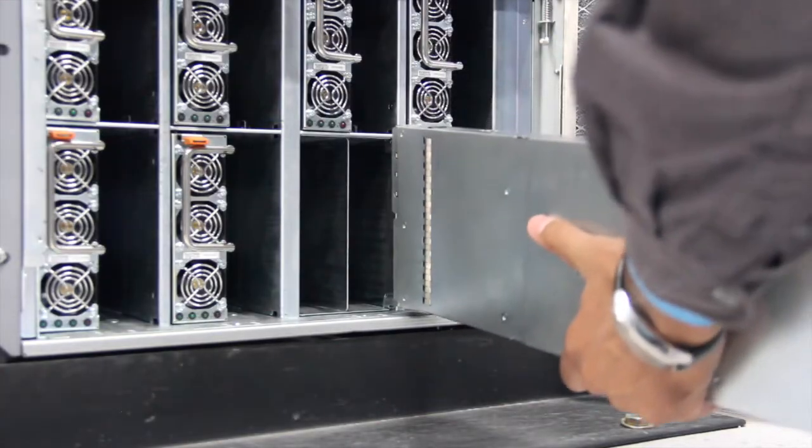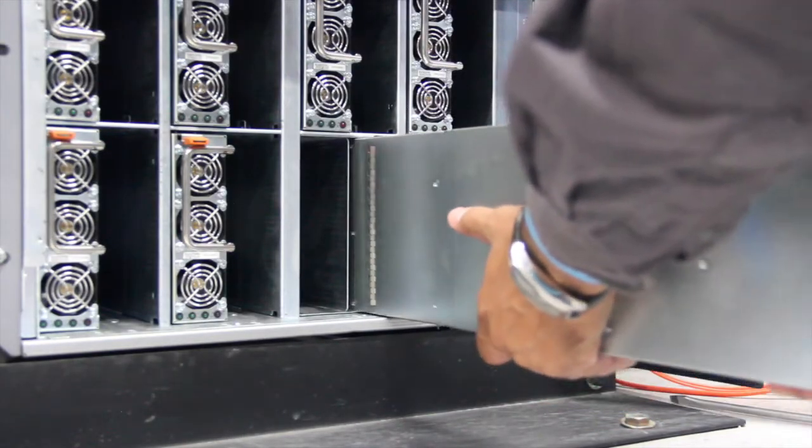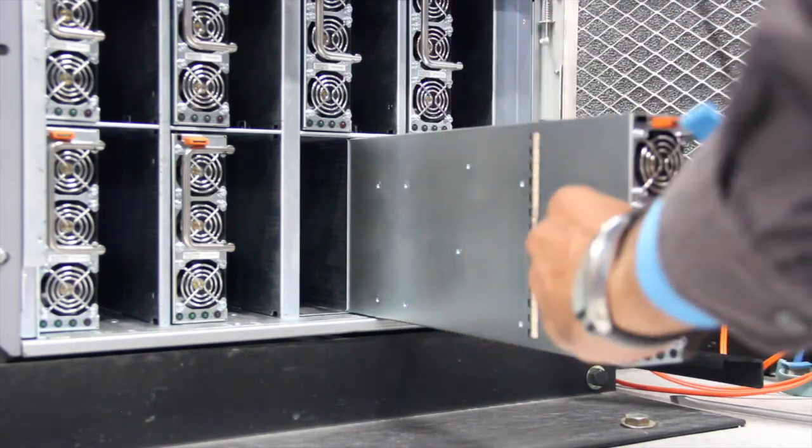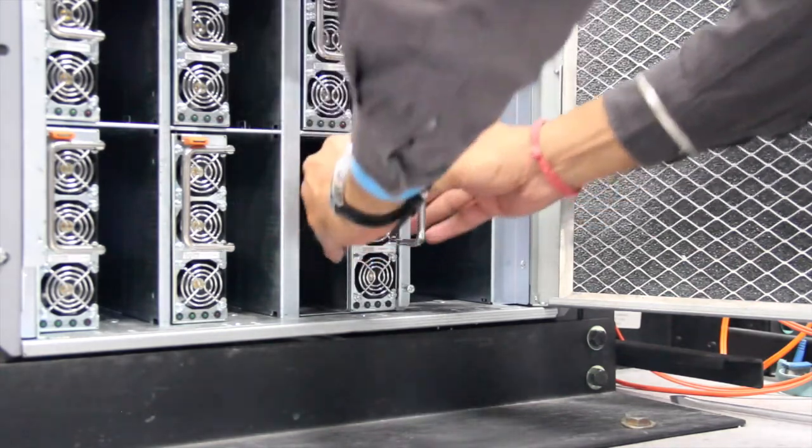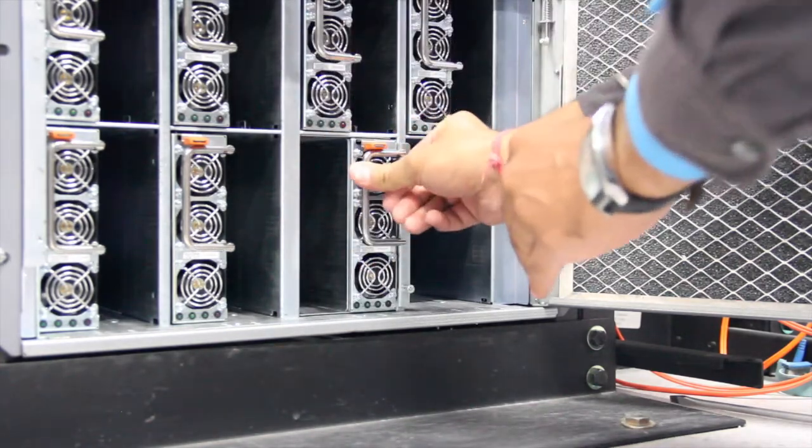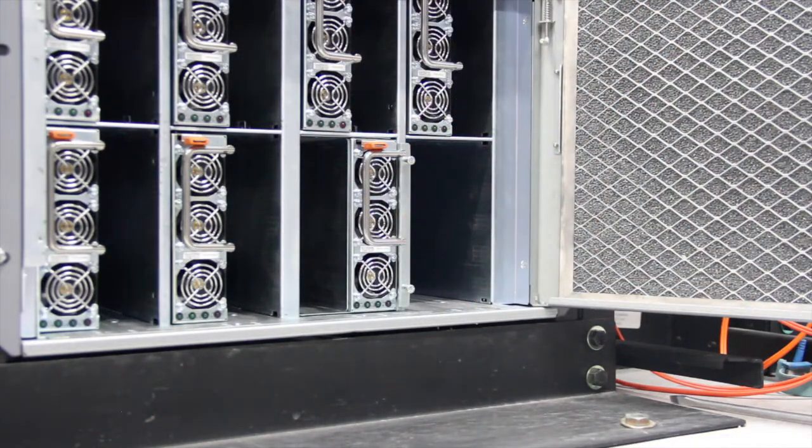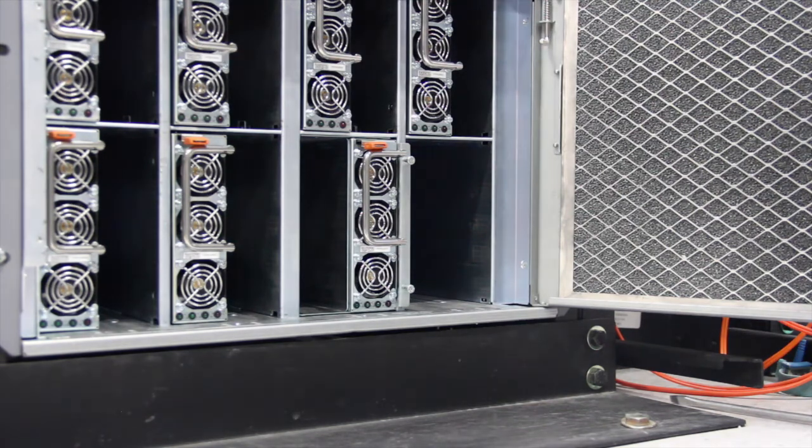Using both hands, slide the PSM into the sleeve installed in the chassis until you feel resistance. Actuate the ejector handle to insert the PSM into the chassis until it is fully seated.